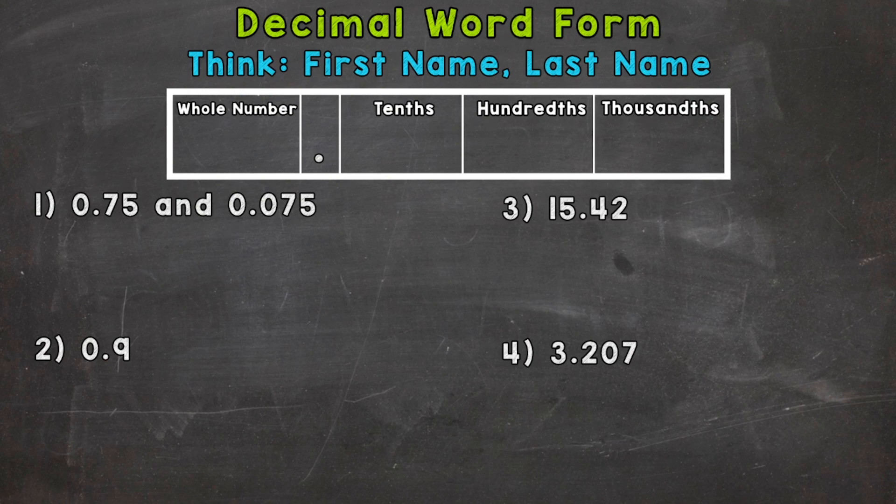We have four examples that we're going to go through together in order to get this down. When it comes to decimal word form, it's very important to think first name, last name.